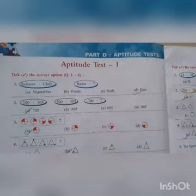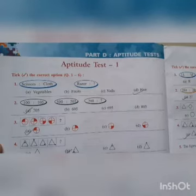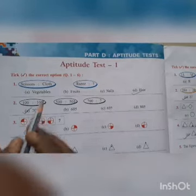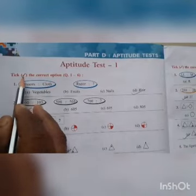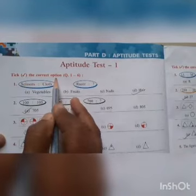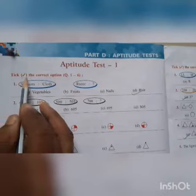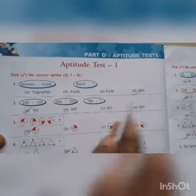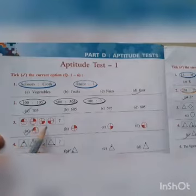Now we are going to solve this aptitude test paper. First one is tick — write the correct option. You have to tick the correct option. Whatever option is given, you have to tick the correct answer.